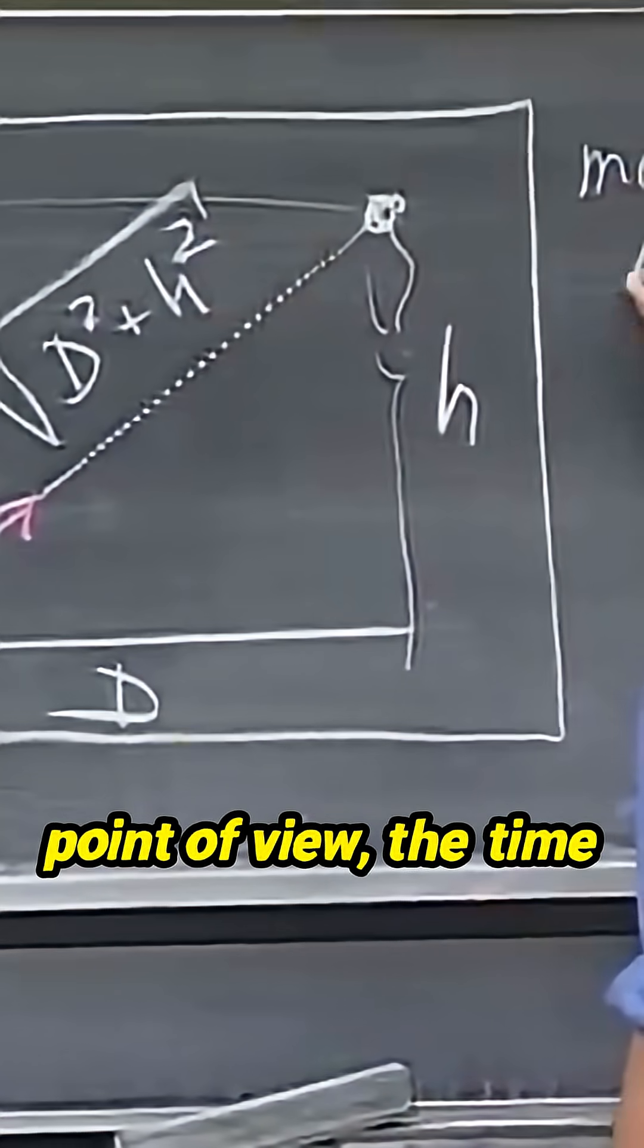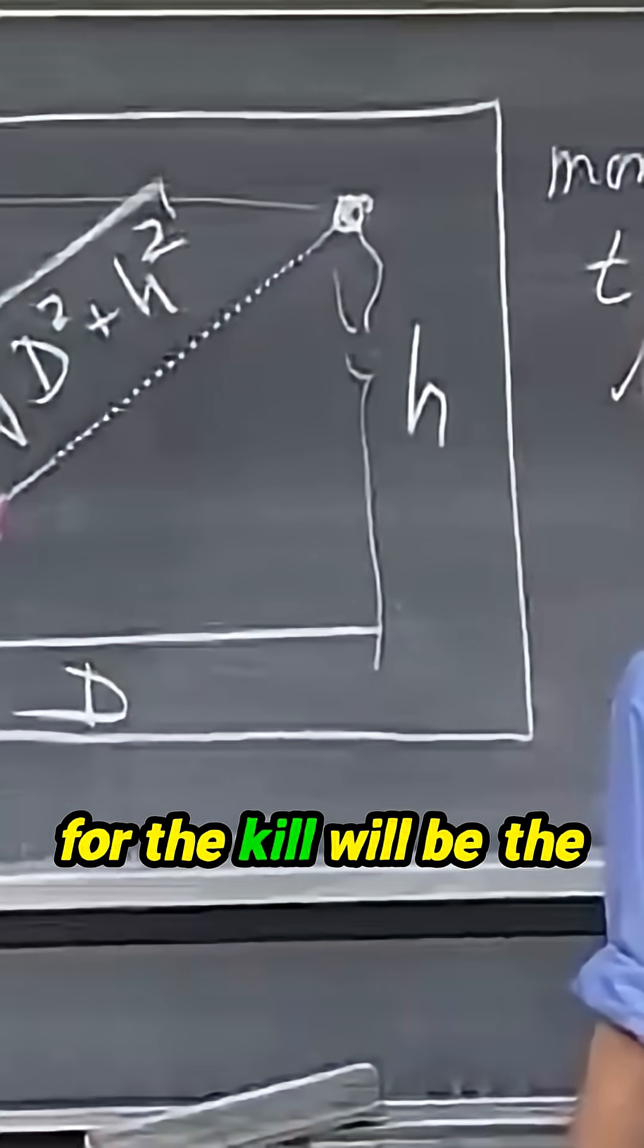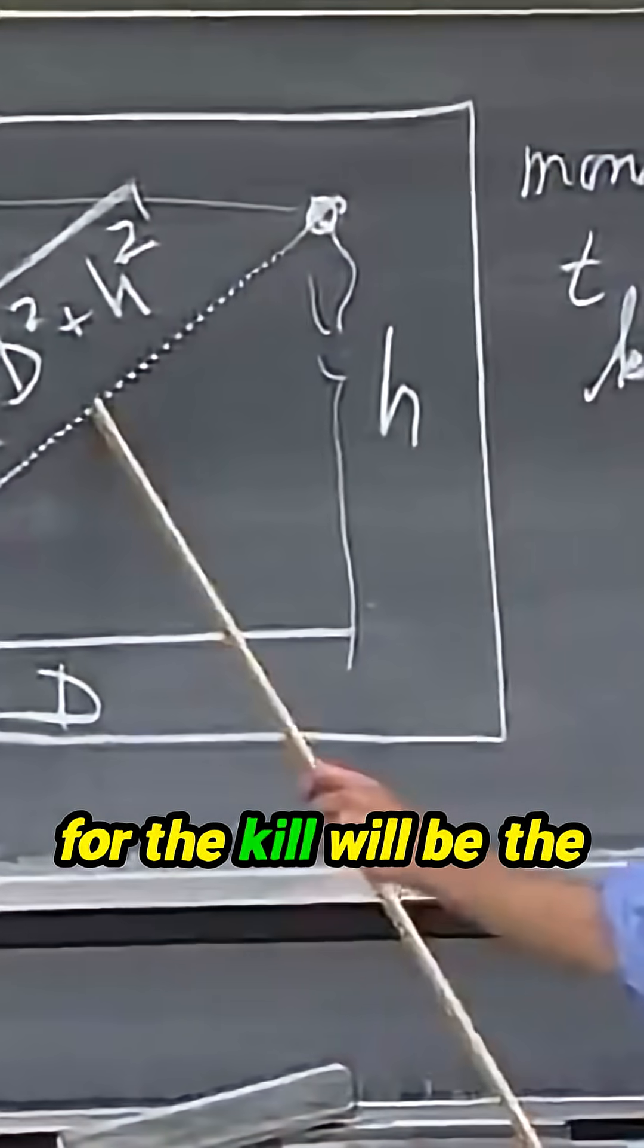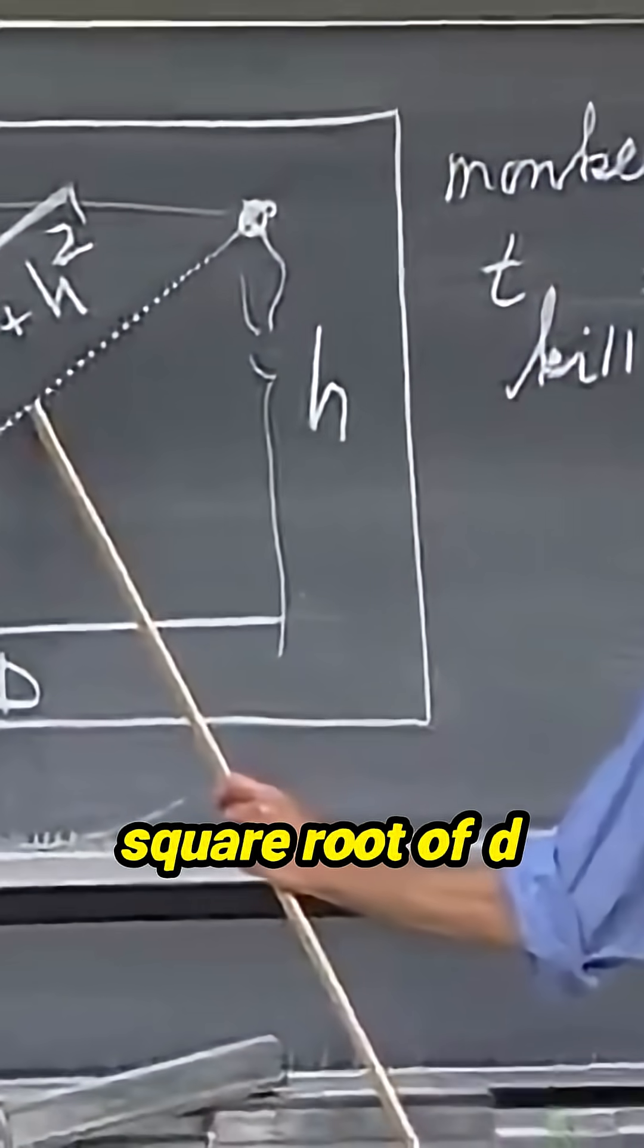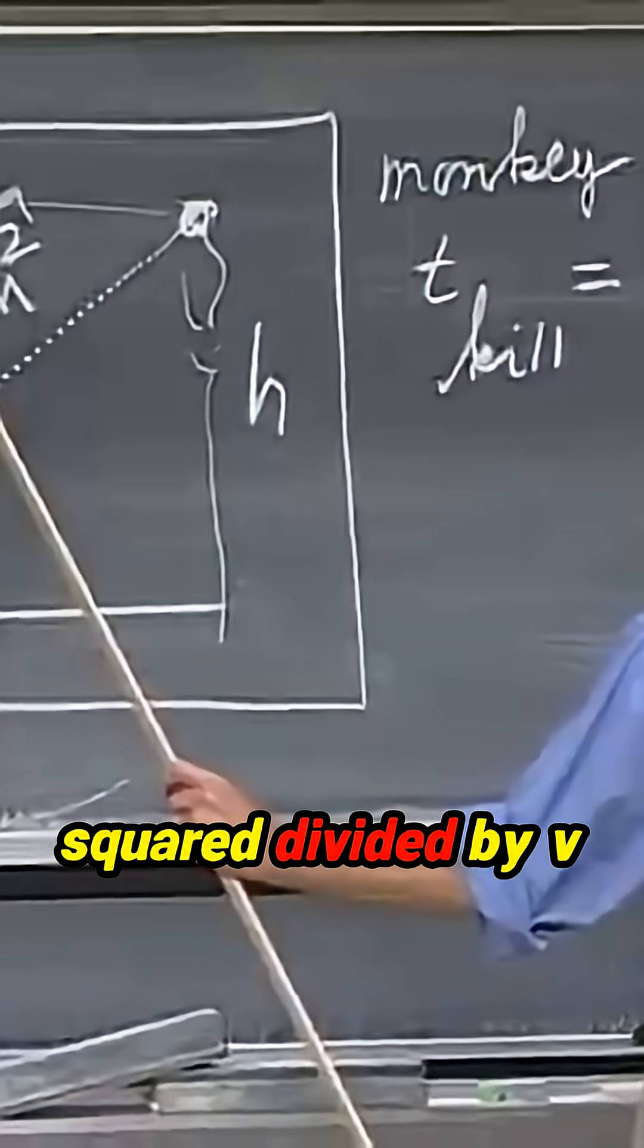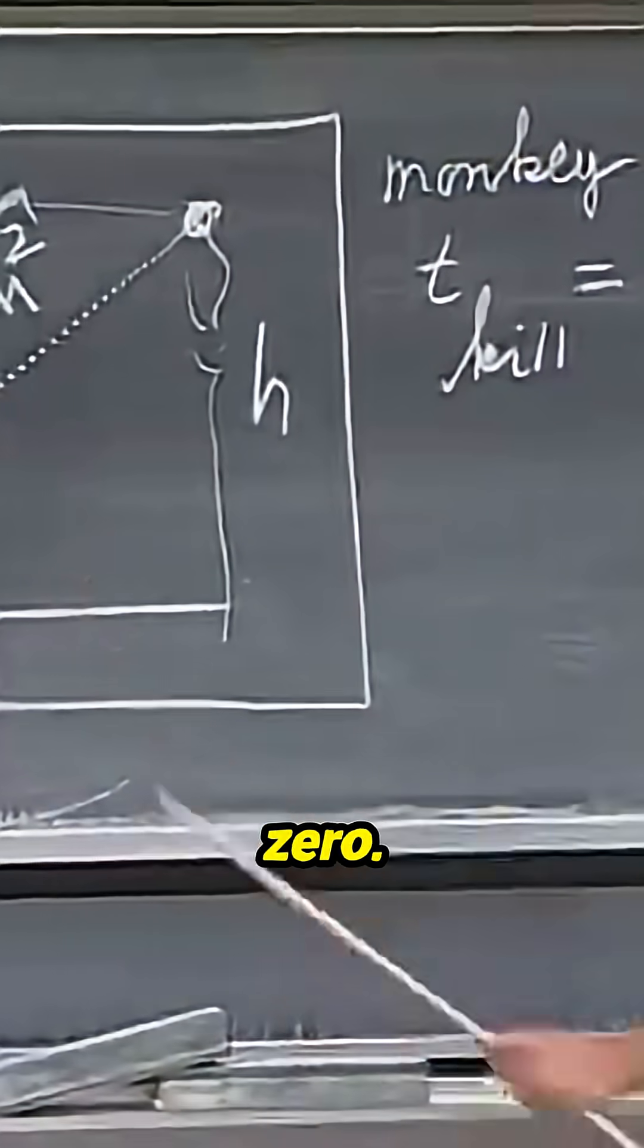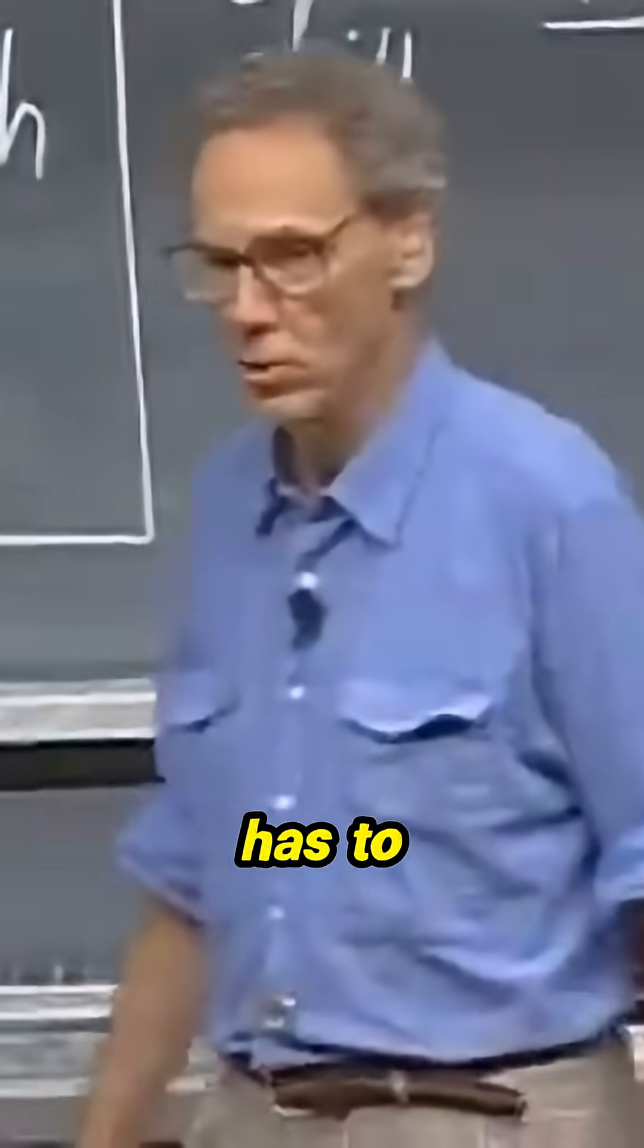So from the monkey point of view, the time for the kill will be the square root of d squared plus h squared divided by v zero. That's how many seconds he has to live.